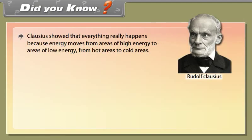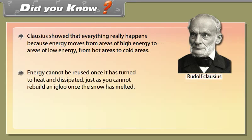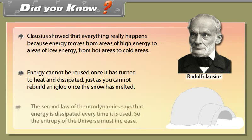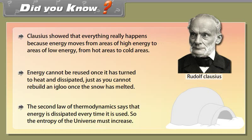Did you know? Clausius showed that energy moves from areas of high energy to areas of low energy — from hot areas to cold areas. Energy cannot be reused once it has turned to heat and dissipated, just as you cannot rebuild an igloo once the snow has melted. The second law of thermodynamics says that energy is dissipated every time it is used, so the entropy of the universe must increase.